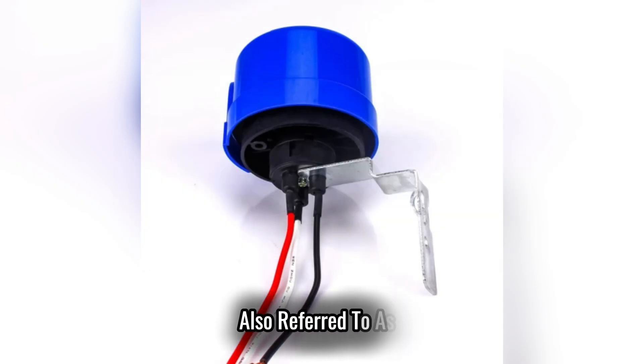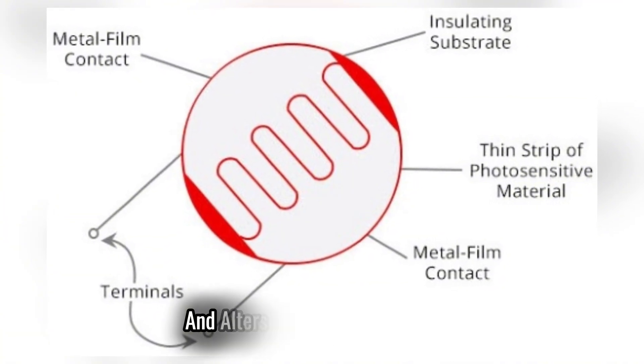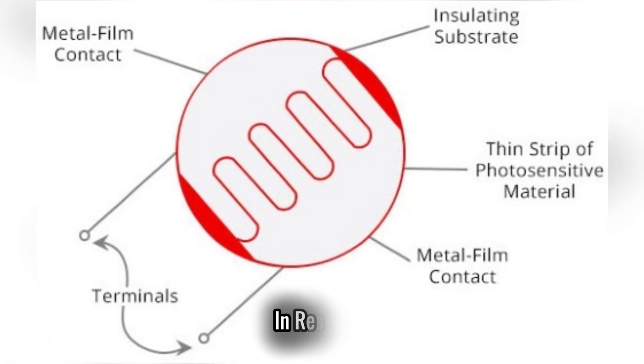A photocell, also referred to as a photoresistor or a light-dependent resistor (LDR), is a device that detects light and alters its electrical properties in response.